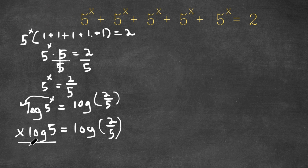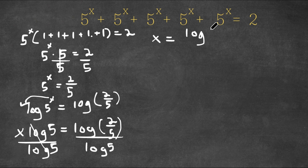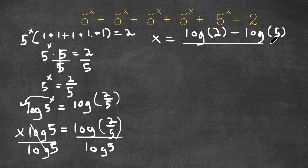Now I'm going to divide both sides by log 5. These two cancel out and I get x is equal to log of 2 over 5, divided by log 5. Using the property of logarithms, we can rewrite the fraction as the numerator: log 2 minus log 5, and we are dividing this by log 5.